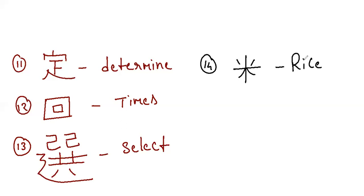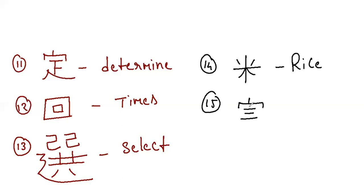Next is the kanji for truth. It has eight strokes: one, two, three, four, five, six, seven and eight. This is the kanji for truth.